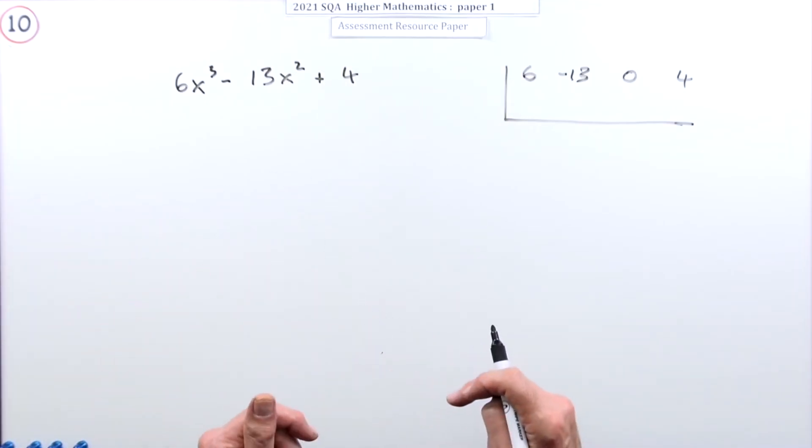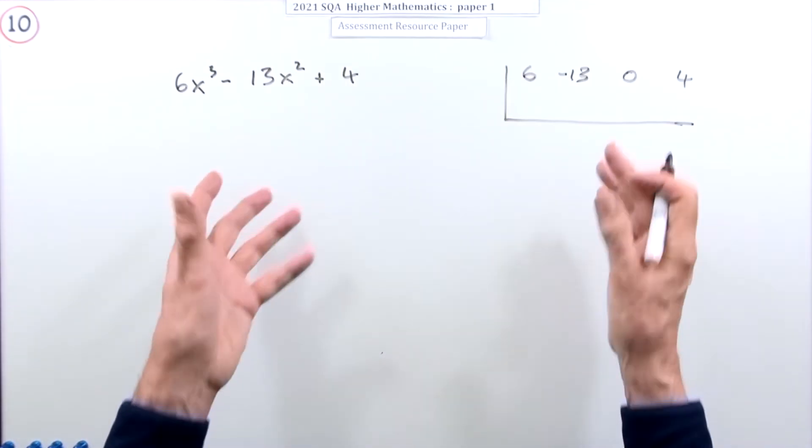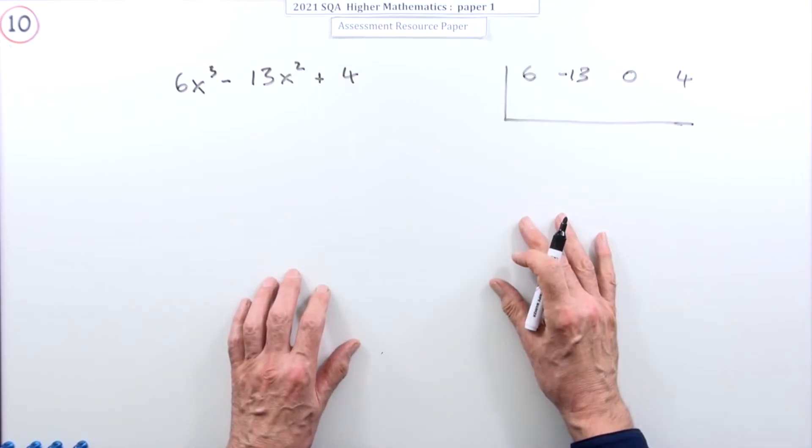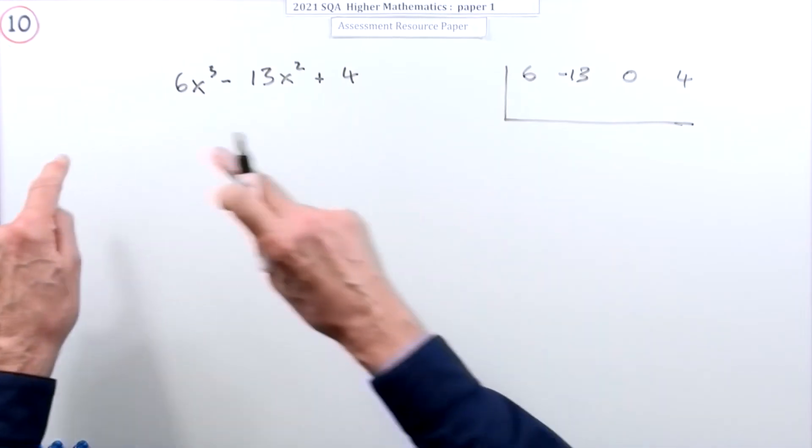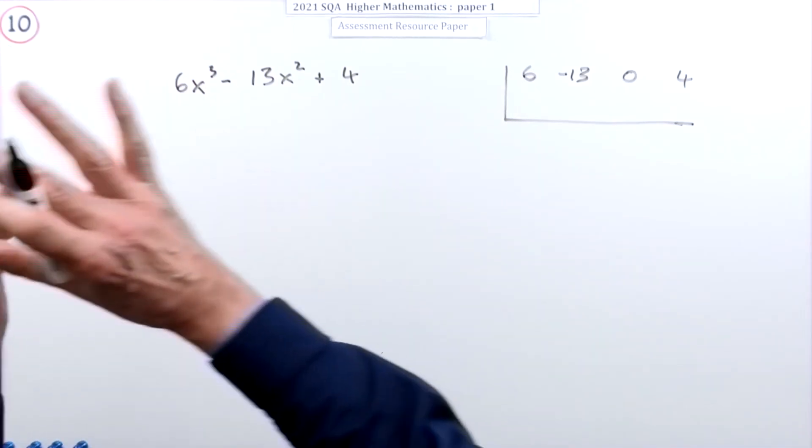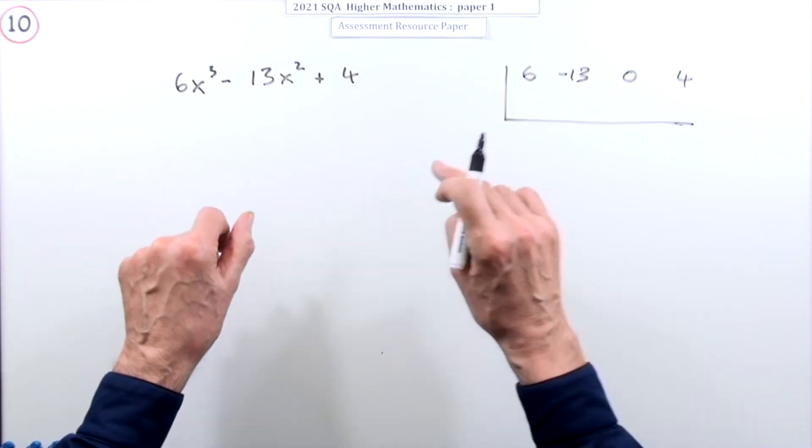So you just have to do some trial and error, but it's not completely trial and error. You're not completely in the dark because you know that when you're multiplying brackets together, the first times the first times the first gives the first, and the last times the last times the last gives the last.